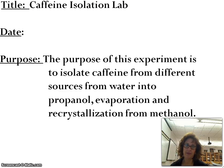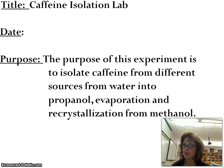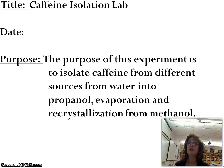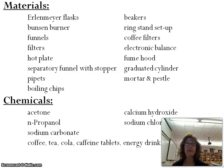If you take a look at this lab, you will see that I have done a major revision. The title is Caffeine Isolation Lab. The purpose of this experiment is to isolate caffeine from different sources — from water to propanol, which is an organic solvent — then evaporate the propanol and recrystallize the caffeine crystals. For materials, we're going to be using Erlenmeyer flasks, Bunsen burners, funnels, hot plates, pipettes, coffee filters, scientific filters, graduated cylinders, and mortar and pestles.